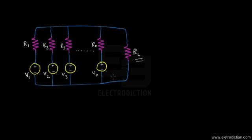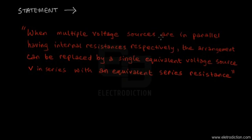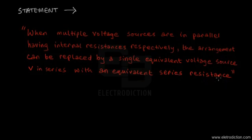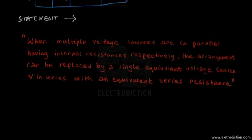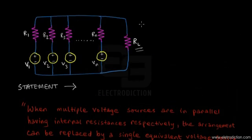Millman's theorem basically offers us a way to simplify such a kind of circuit, because such circuits could be really complicated when it comes to real-life problems. Just keeping that in mind, let's state the theorem. The statement basically says that when multiple voltage sources are in parallel having internal resistances respectively, the arrangement can be replaced by a single equivalent voltage source V in series with an equivalent series resistance.